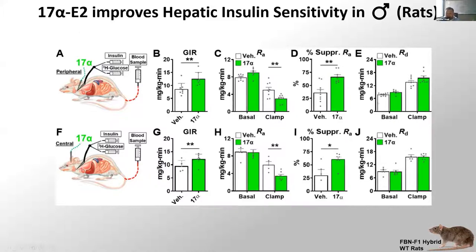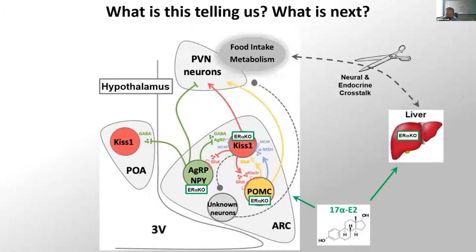This confirms that hepatic insulin sensitivity is improved when we acutely provide this estrogen. Because there is an established connection between the hypothalamus and the liver in regulating systemic glucose homeostasis, we also infused this estrogen into the brain at very minor doses. Contrary to expectation, infusing into the brain phenocopies the peripheral infusion results — increased glucose infusion rates, suppression of hepatic glucose production, and no change in the rate of peripheral disposal. This estrogen is probably multimodal; there is an established connection between AgRP neurons and hepatic gluconeogenesis, and emerging data suggest POMC neurons can do this as well.